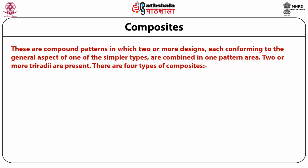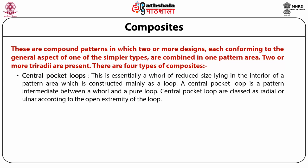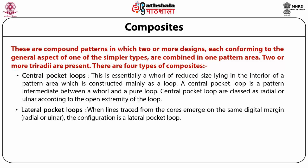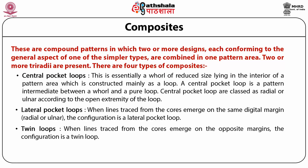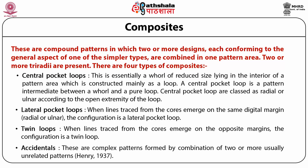There are four types of composites. First, central pocket loops — essentially a whorl of reduced size lying in the interior of the pattern area which is constructed mainly as a loop, intermediate between a whorl and a pure loop, classified as radial or ulnar according to the opening extremity of the loop. Second, lateral pocket loops — when lines traced from the core emerge on the same digital margin, radial or ulnar, the configuration is a lateral pocket loop. Then twin loops — when lines emerge on opposite margins, the configuration is a twin loop. Finally, accidentals — complex patterns formed by combination of two or more usually unrelated patterns, as described by Henry in 1937.